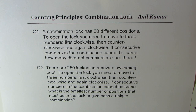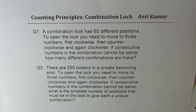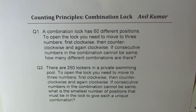Question number one: A combination lock has 60 different positions. To open the lock you need to move to three numbers — first clockwise, then counterclockwise, and again clockwise. If consecutive numbers in the combination cannot be the same, how many different combinations are there?